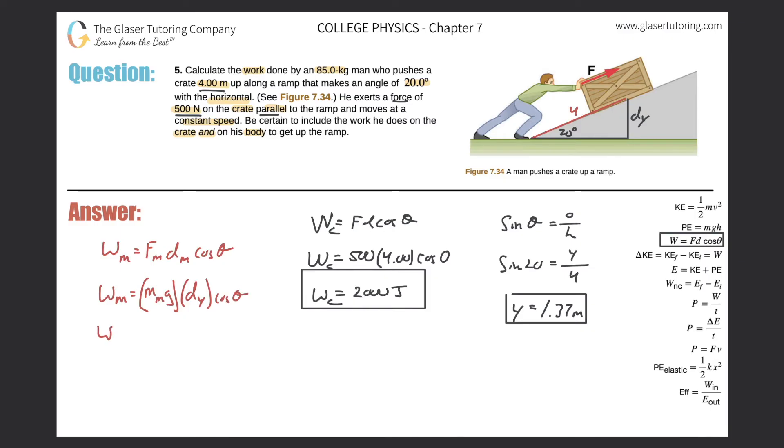His mass is 85 kilograms and gravity is 9.80, and he traveled in the y direction 1.37 meters times cosine of zero. So the work the man did on himself would be 85 times 9.8 times 1.37, and cosine of zero is just one, so this simply works out to 1140 joules.